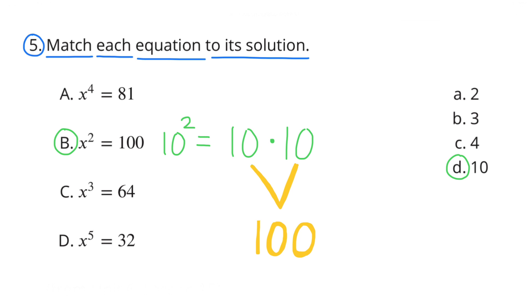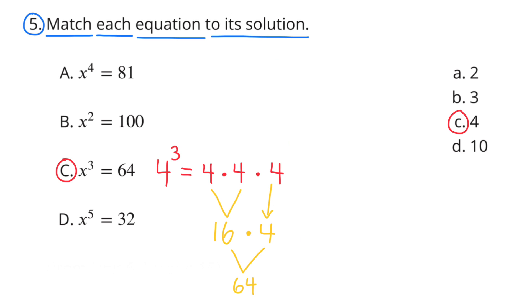Part B: X squared equals 100. I selected D, or 10. 10 squared equals 10 times 10, or 100. I selected A, or 2.